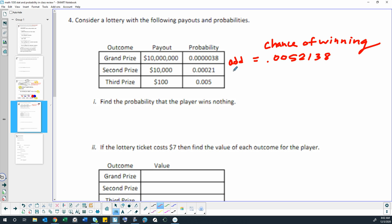To find the chance of that not happening, we take 1 and subtract that number because a probability of something definitely happening is 1. We subtract that out and get a probability of 0.9947862.